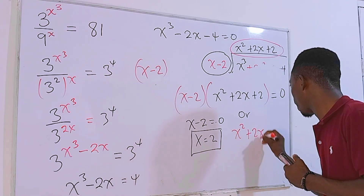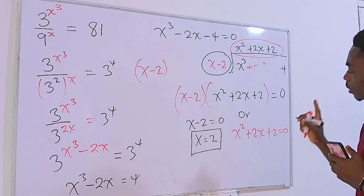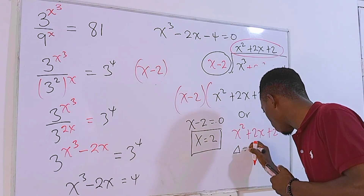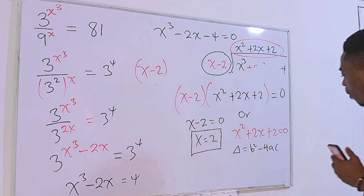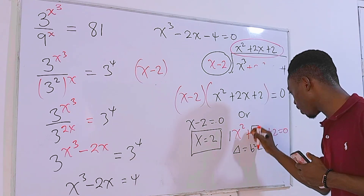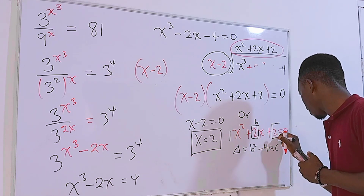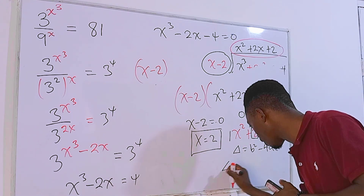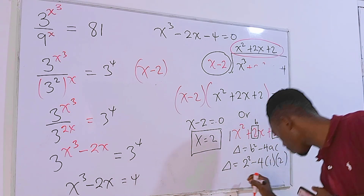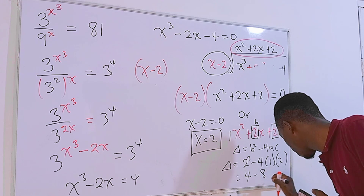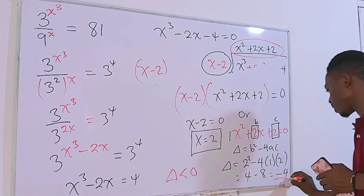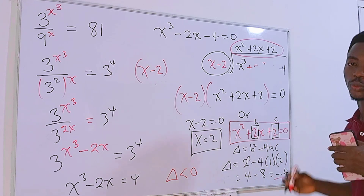Before solving the quadratic, let's use the discriminant formula: delta equals b squared minus 4ac. Here a equals 1, b equals 2, c equals 2. So delta equals 2 squared minus 4 times 1 times 2, which is 4 minus 8, giving us negative 4. Since delta is less than zero, this quadratic has no real solutions.